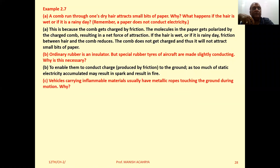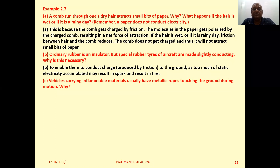Question C: Vehicles carrying inflammable materials usually have metallic ropes touching the ground during motion. Why? The reason is the same as discussed in Question B — the metallic rope grounds any induced charges, preventing dangerous sparks.